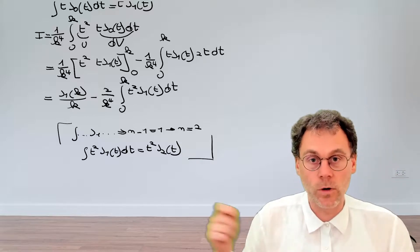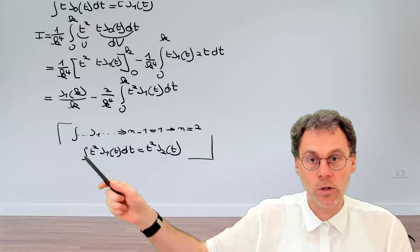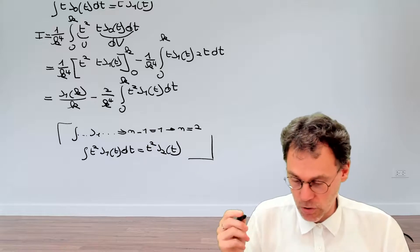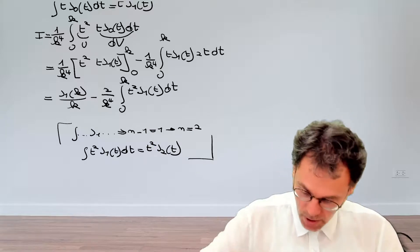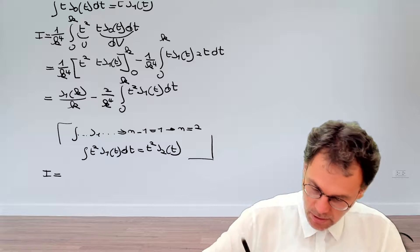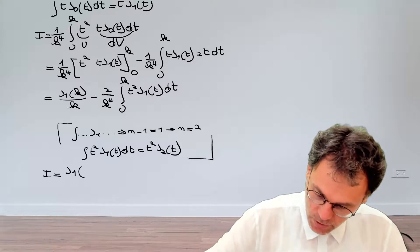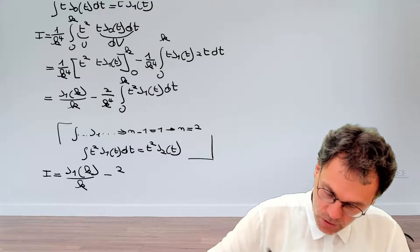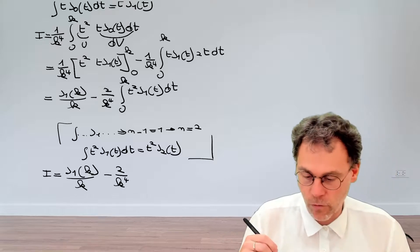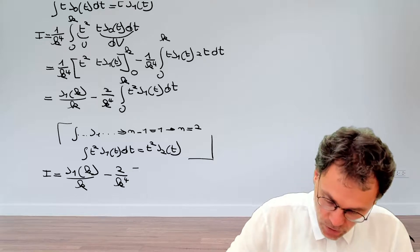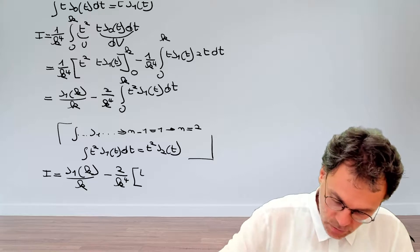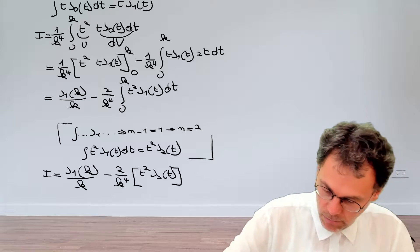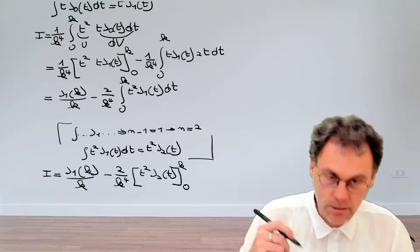And lo and behold, what do we realize? We realize that what we derive from this formula is exactly what we need to solve here. So we are now in a position to solve this once and for all. So our integral: that's J_1(k) divided by k, and then we have minus 2 divided by k^4. And then we know what the primitive of this thing is. It will be equal to t^2 J_2(t) being evaluated between the bounds k and 0.